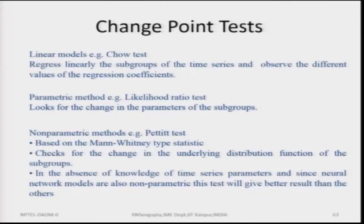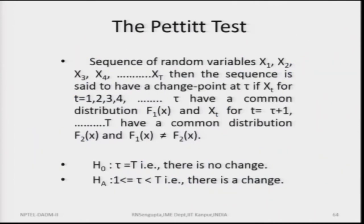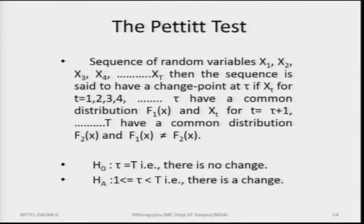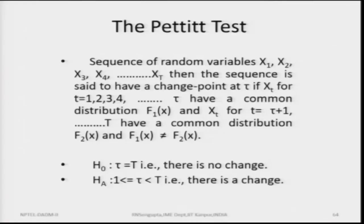Here is the Pettitt test concept more formally. Consider a sequence of random variables x1, x2, x3, ..., x-capital-T. The sequence is said to have a change point tau if x-t for t from 1 to tau has a common distribution f1(x), and from tau plus 1 to capital T there is another distribution f2(x), such that f1 and f2 are different. This is the simplest form — considering that the distribution itself is changing, for example normal to exponential.